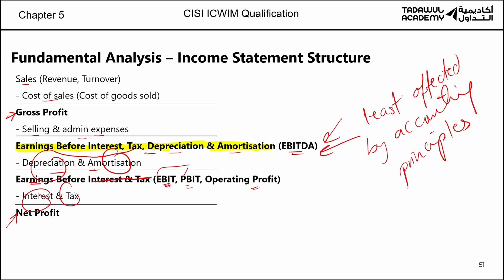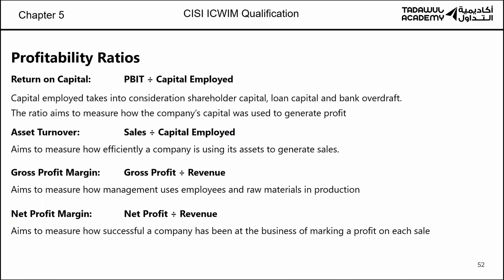Now that we know how a normal income statement looks, let's start talking about ratios. Why do we use ratios? To compare — compare ourselves to last year and the year before, but also compare ourselves with other companies in the market. Ratios help us compare ourselves to previous years and to our competitors. There are different ratios: ratios that talk about profit, debt, liquidity, and investments.